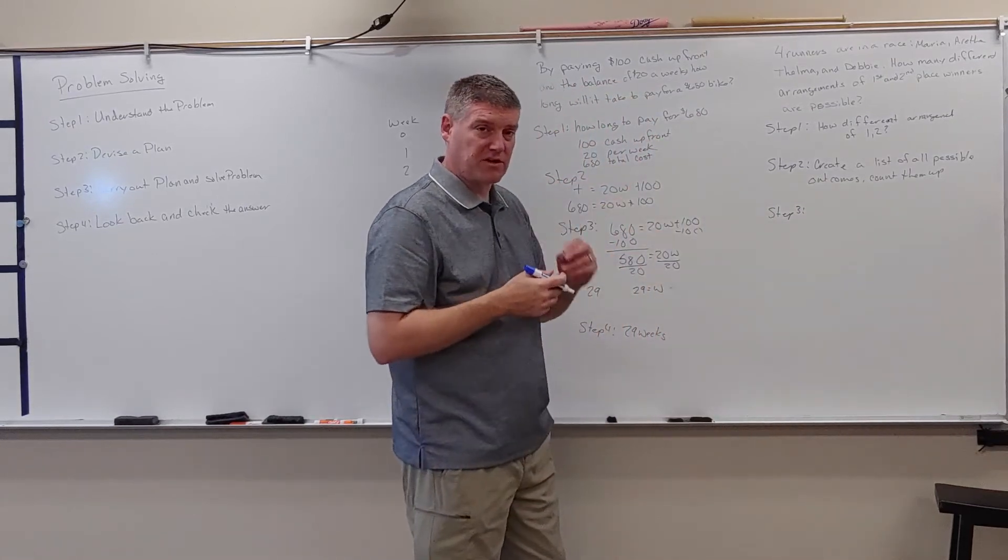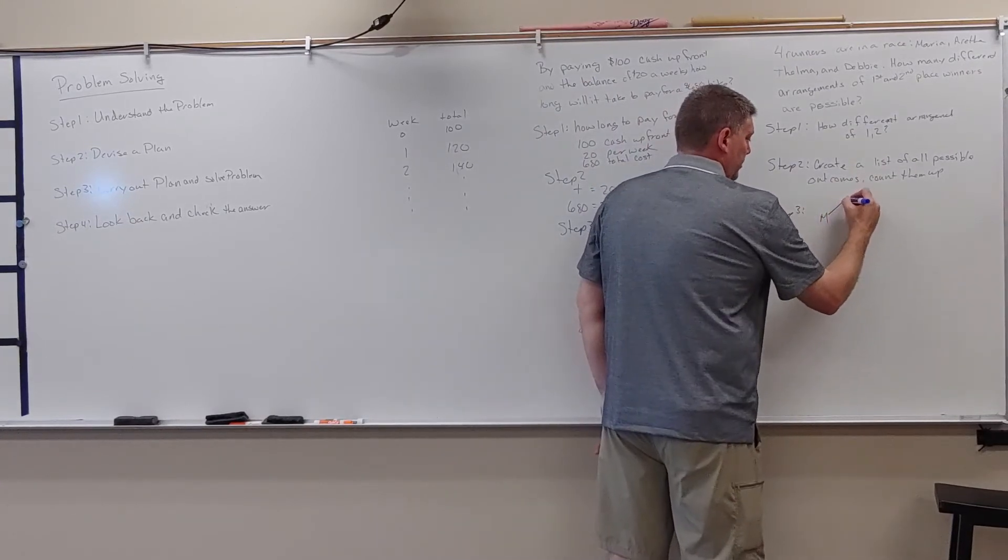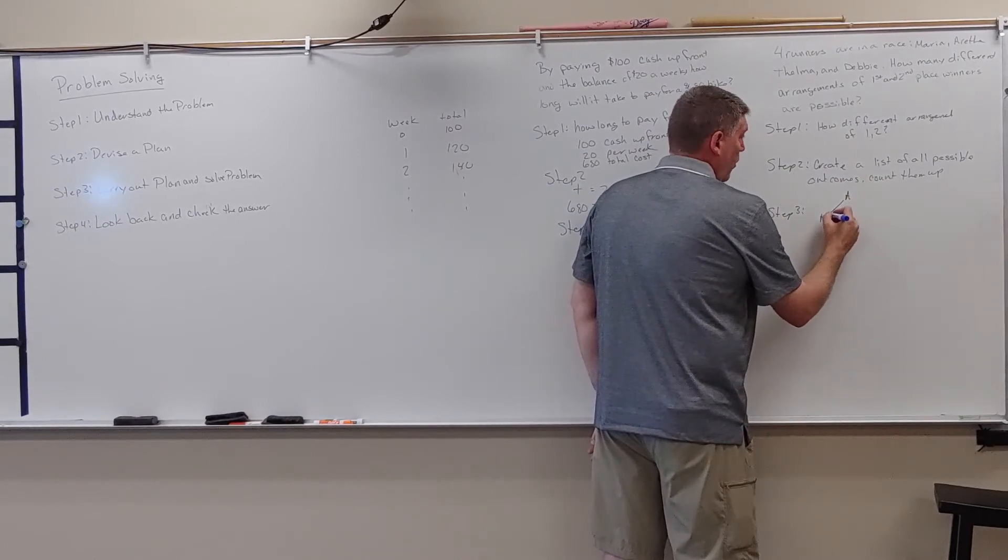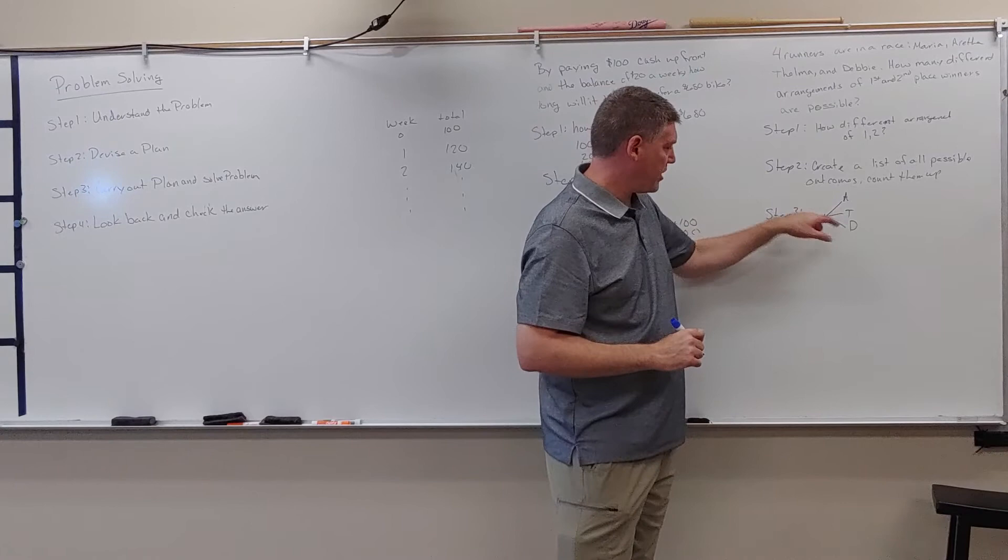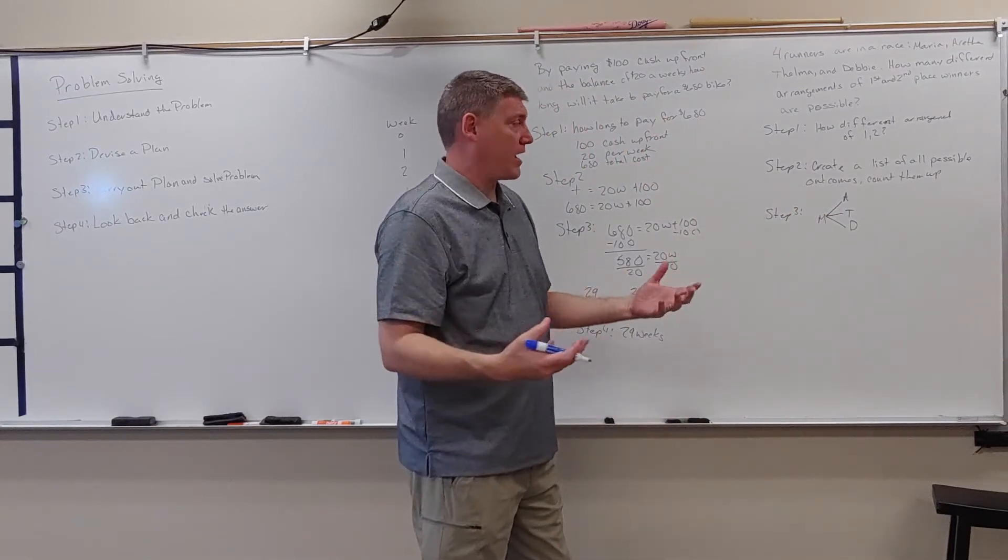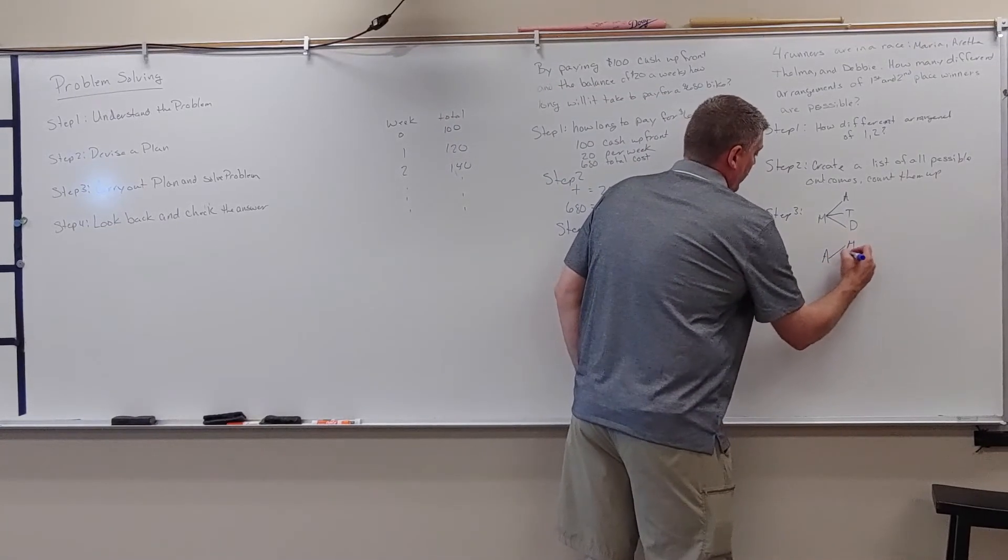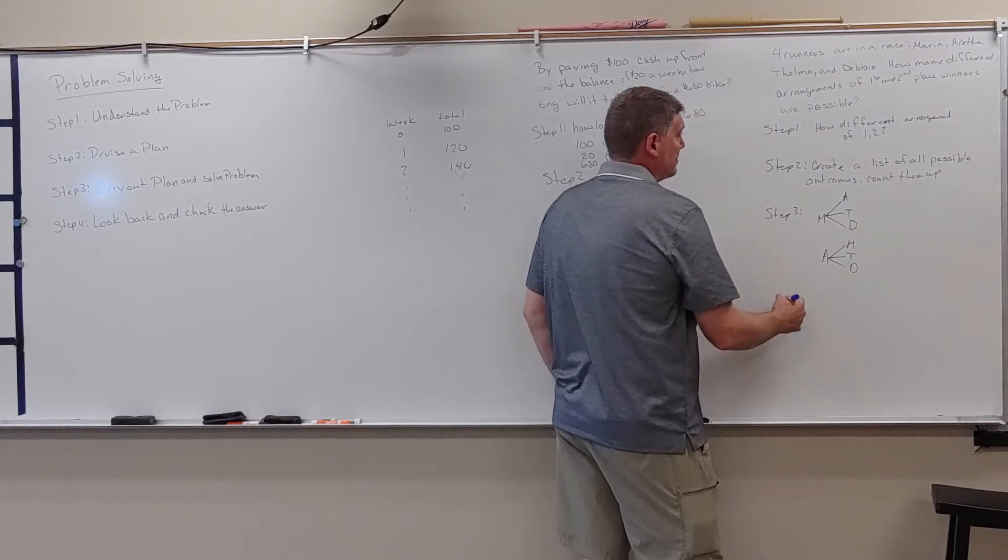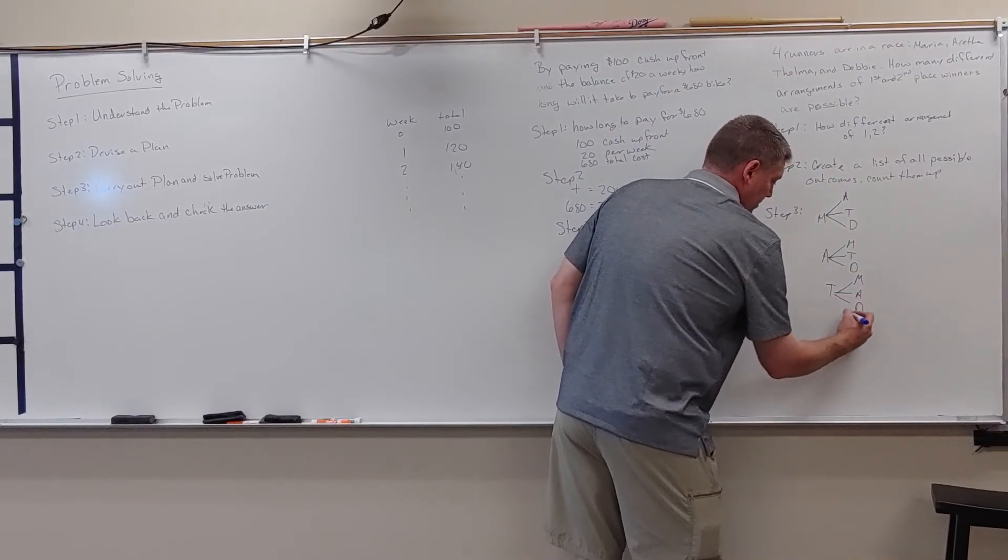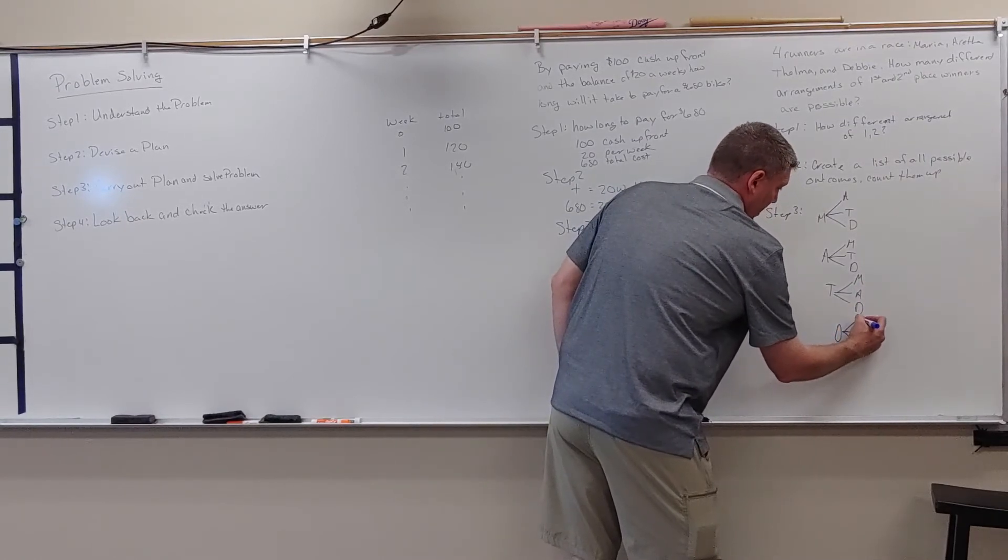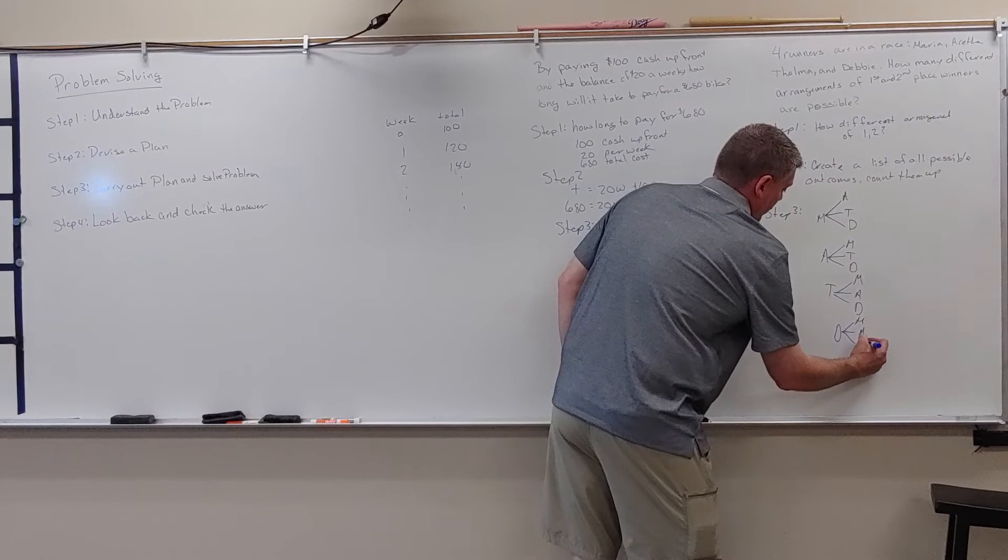So I'm going to abbreviate it just to a first initial. So if Maria was in first place, then she could have Aretha come in second. Or she could have Thelma. Or she could have Debbie. So if Maria comes in first place, there's three different possible outcomes for that second place. I don't really care who comes in third and fourth. So if I look at Aretha, I could have Maria, Thelma, or Debbie come in second place. Some of you guys are probably starting to see a pattern here.